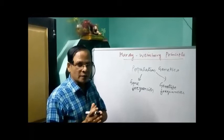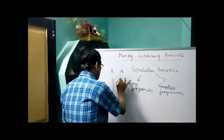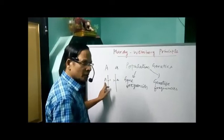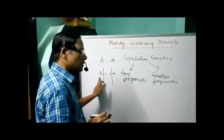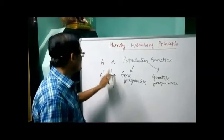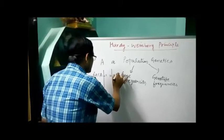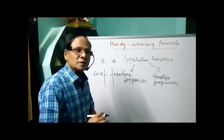Gene frequency is the percentage of an allele as compared with other alleles present at that locus. For example, taking a homologous chromosome in heterozygous condition, the percentage of the dominant allele as compared to the recessive allele is called gene frequency. The percentage of an allele in a locus as compared to the other allele present at the same locus is called gene frequency or allele frequency. If you know the percentage of A is 60%, then the remaining 40% is formed by the recessive allele.